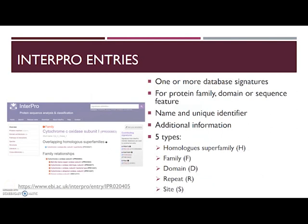The signatures from the databases are linked to InterPro entry pages. Each individual InterPro entry consists of one or more database signatures that are characteristic of the same protein family, domain, or sequence feature. The entry is given a name and a unique InterPro identifier. It is also annotated with additional information, as you can see in the illustration, like overlapping homologous superfamilies, family relationships, a description, and gene ontology terms, which can be found in different sections on the entry page. On the right side of the page you can find the signatures that were used to create the page.